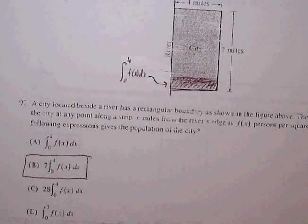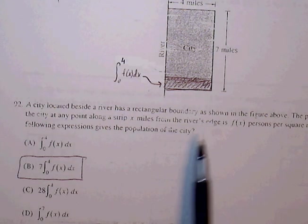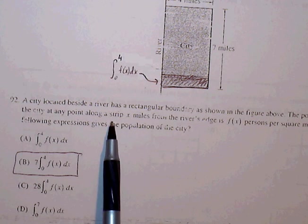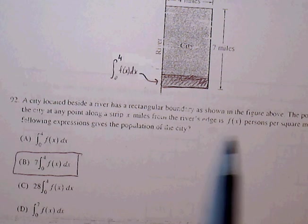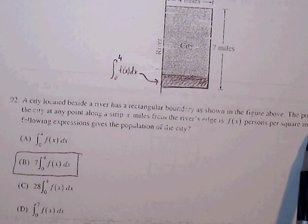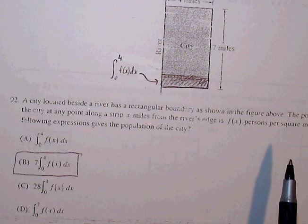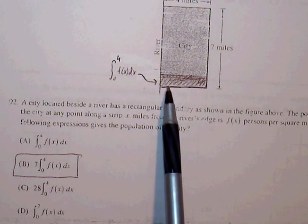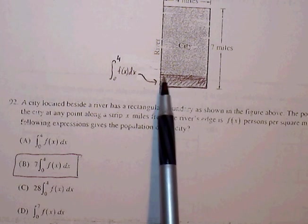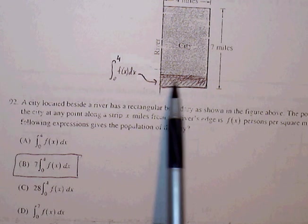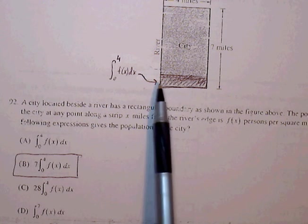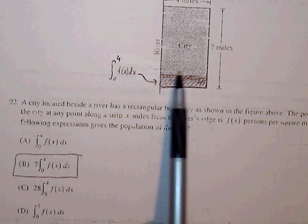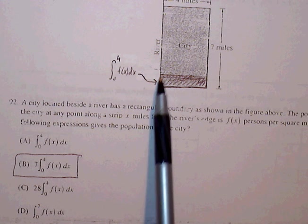Okay, 92, a city located besides the river has a rectangular boundary as shown. The population density of the city at any point along the strip x miles from the river's edge is f(x) persons per square mile. Which of the following expressions give the population of the city? So let's talk about the population density. So the population density is going to be along this strip here. So if I find the definite integral from 0 to 4 of f(x), then that will give me the population for this region here.